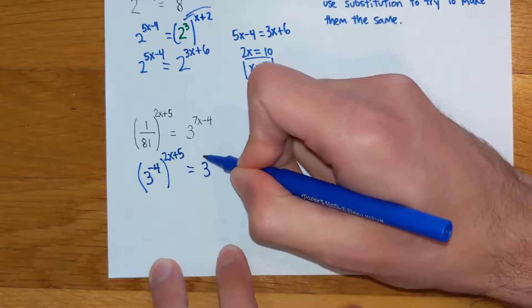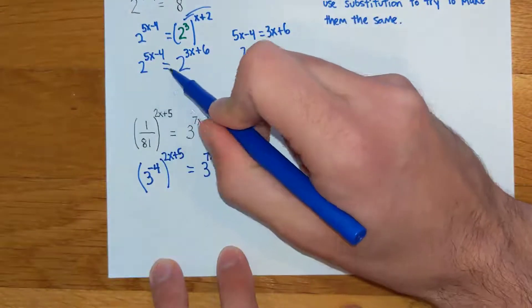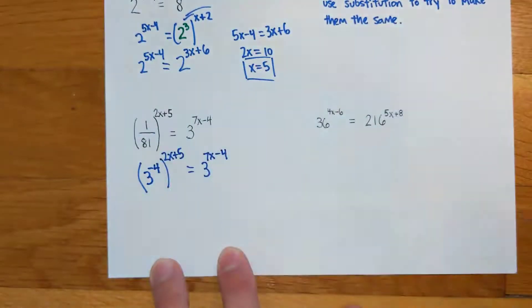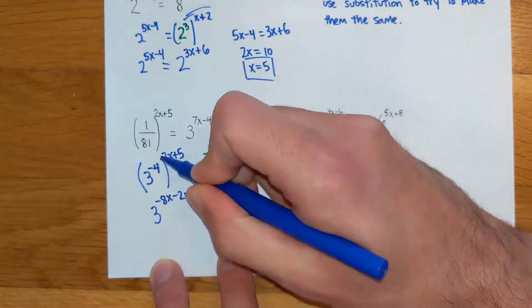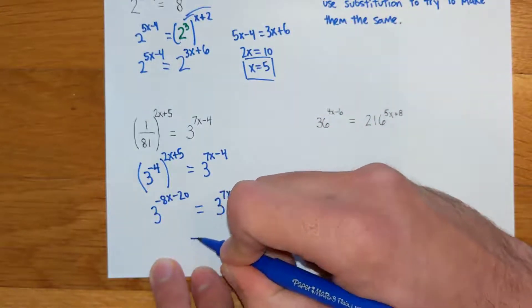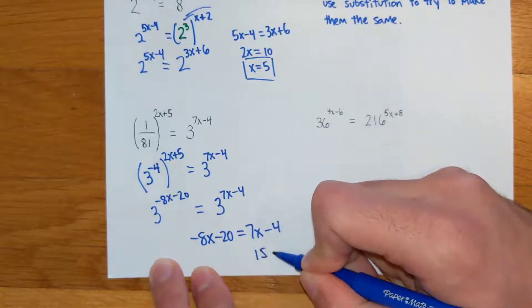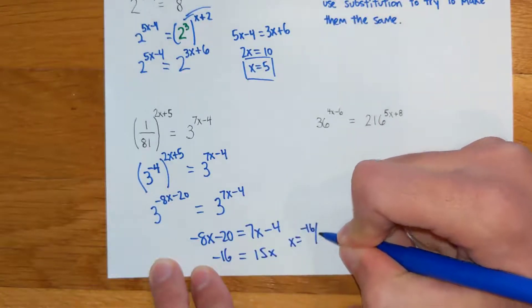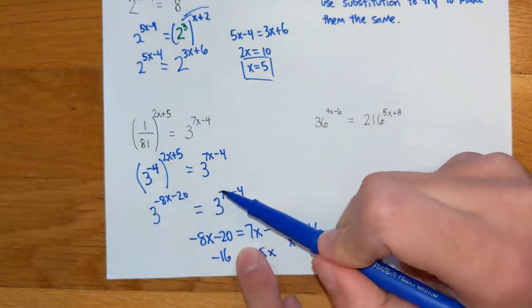Biggest mistake I see kids make on these problems is they try changing the wrong side of the problem. You want to make your bases into nice little whole numbers like they were both 2s right here. On this one, I want to make them both into 3s. This guy is what equals 3 to the negative 4th power. So if you do that, you're going to get 3 and it's going to go negative 8x minus 20 if you distribute that out. This side just says 3 to the 7x minus 4. And now I'm doing my same normal math. I'm going to set my exponents equal. And then I'm just doing algebra to get an answer. So it looks like I'm getting a fraction on this one, x equals negative 16 over 15. So I had to manipulate it so the bases were the same, then you just equal that exponent to this exponent.